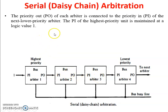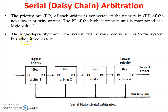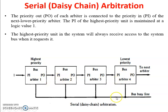The priority IN of the highest priority unit is maintained at logic value one. This means the highest priority unit in the system will always receive access to the system bus when it requests it. Whenever any processor requests to access the system bus, the controller evaluates starting from the highest priority.